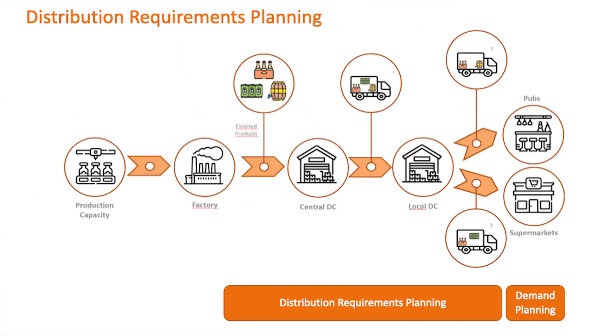Distribution requirements planning is a systematic process which determines, as the name suggests, the distribution requirements throughout the supply network — in other words, which goods, in what quantities, and at what location are required.